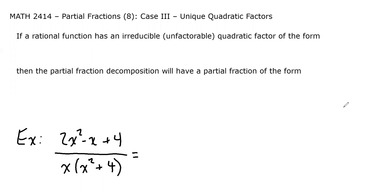So how do we handle this? Well, with a pretty simple statement. If a rational function has an irreducible, which means unfactorable, quadratic factor of the form ax² + bx + c, so a degree 2 factor that can't be factored further.